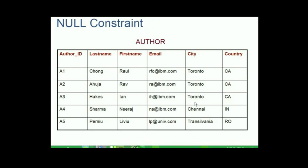Null constraints specify that attribute values cannot be null. Let us see what happens if in the author relation a null value for either the last name or first name attribute is entered. It poses difficulty in identifying the right author just in case either the last name or first name is the same. This means an author must have a last name and not a null value.